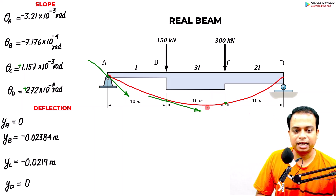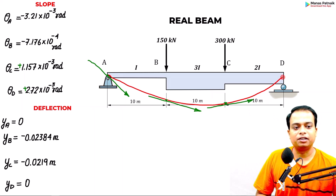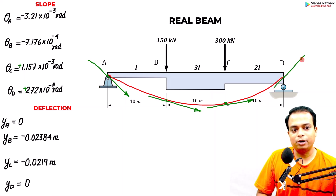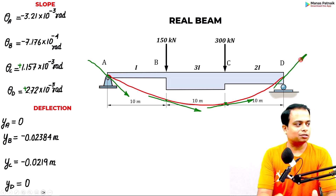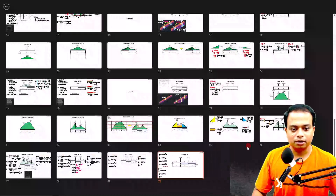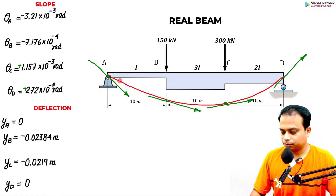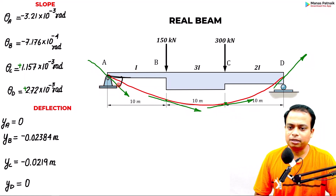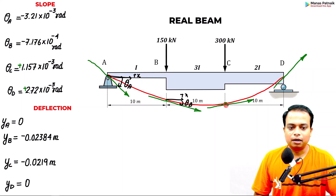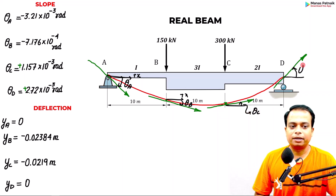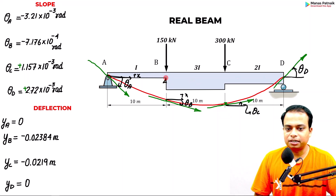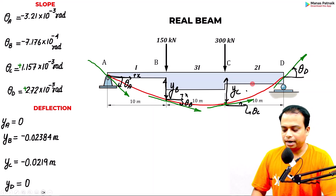At C and D the positive slopes show the tangent lifting — that is the key difference. As for deflections, y_B and y_C are obtained from the bending moments of the conjugate beam. That completes the full solution: slopes at all four points and deflections at B and C are all found.